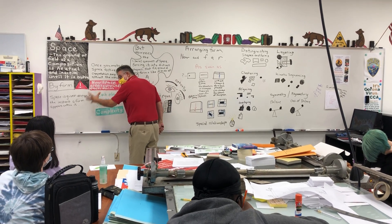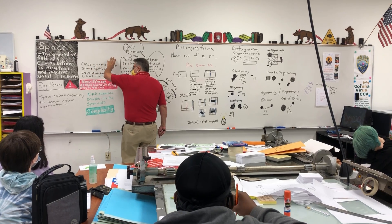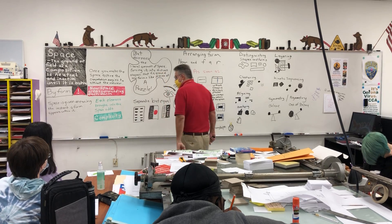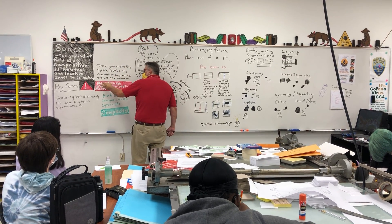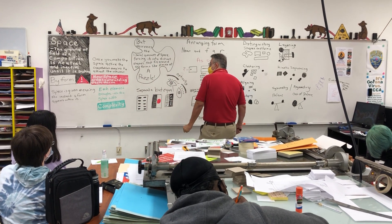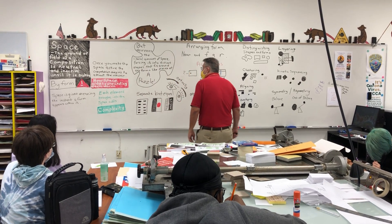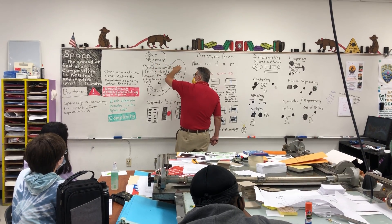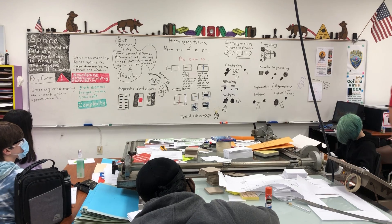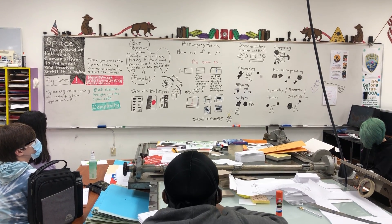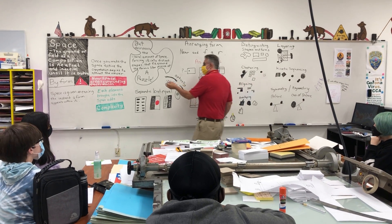The moment I started adding to that space is when it started to create meaning for you. Once you make the space active, the composition begins to attract the viewer. Once you start adding and making that space active, new space is created surrounding each one of those forms. Each element brought into the space adds complexity, but decreases the amount of literal space, forcing it into a distinct shape that fits around the forms like pieces of a puzzle. What is that shape?